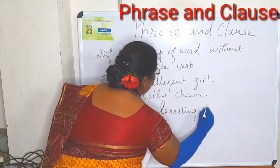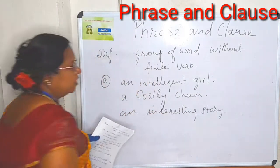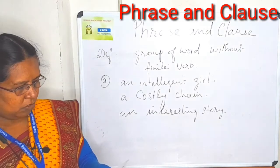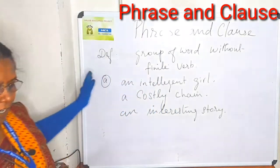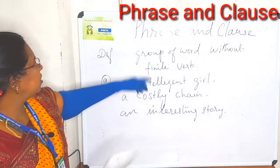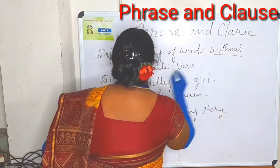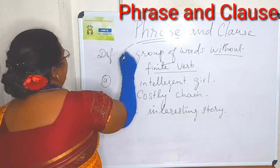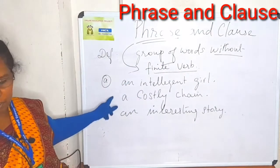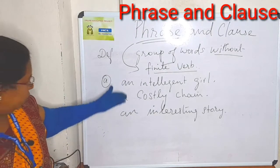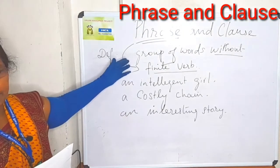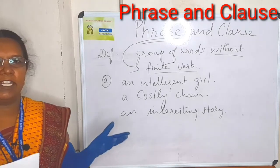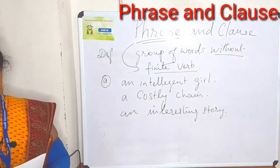This sentence is not complete, isn't it? So we have to add something. Then only we can finish that sentence and it will give a meaningful sense. This one is a phrase — a group of words without a finite verb. That is called a phrase. You have to know this definition. If you go through so many examples, you can identify this definition and you can know how to write a phrase. Phrase is easy for you to learn also.